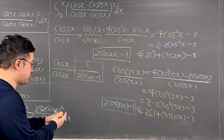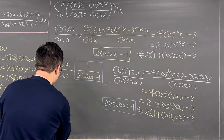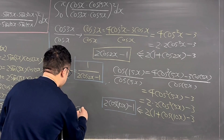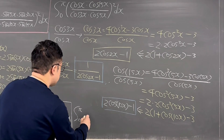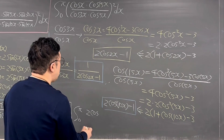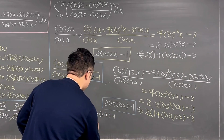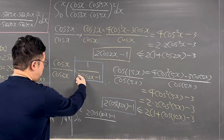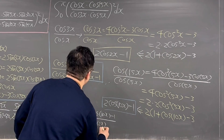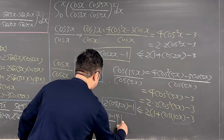Using both results, the integral becomes the integral from 0 to pi of [(2cos(10x) − 1) / (2cos(2x) − 1)]² dx.